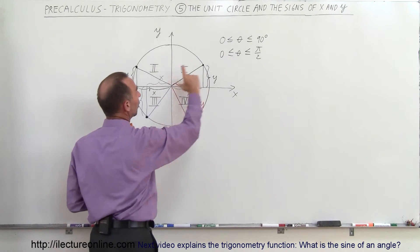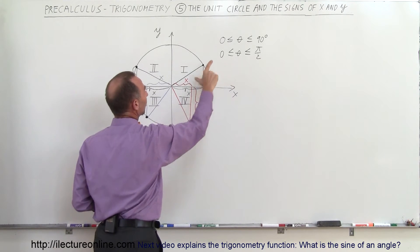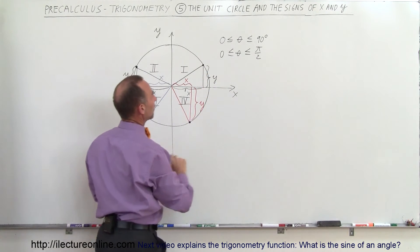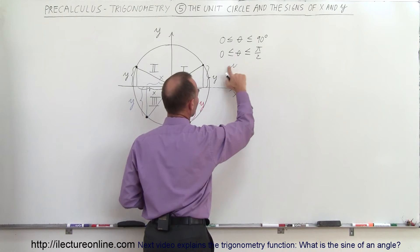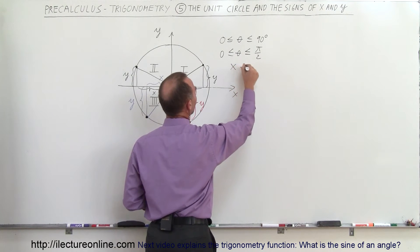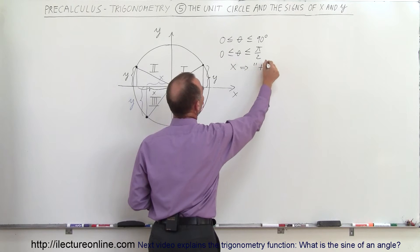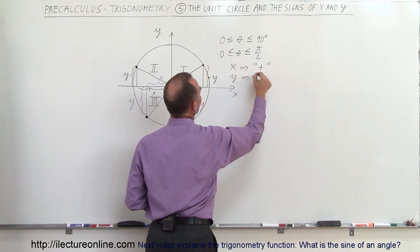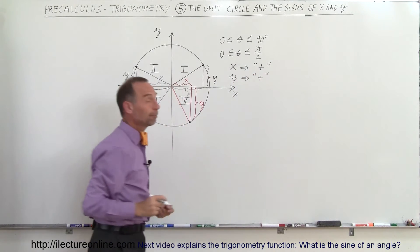In the first quadrant, the value for y will always be positive, and the value for x will always be positive. So the x-value is positive and the y-value is positive in the first quadrant.